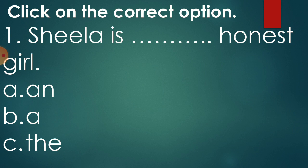The first sentence is, Sheila is dash honest girl. Options given are: an, a and the. Sheila is dash honest girl. So this sentence is from our article lesson. Okay. So which article will come here? Sheela is dash honest girl. Will it be an? Sheila is an honest girl. Sheila is a honest girl. Or Sheila is the honest girl. And the answer will be, option A, an honest girl.